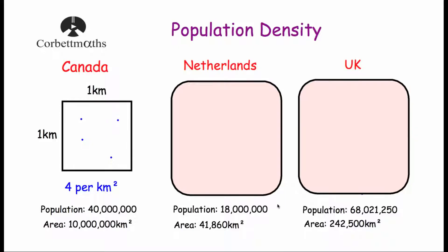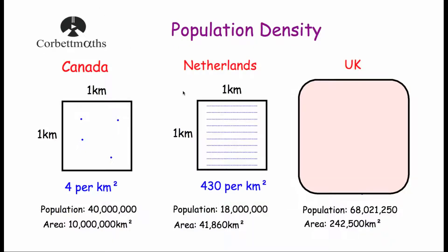The Netherlands has a population of 18 million and an area of 41,860 kilometres squared. If we divided the Netherlands into 41,860 kilometre squares and shared 18 million people out equally, you'd find that the population density of the Netherlands is approximately 430 per kilometre squared — much greater than the population density of Canada.